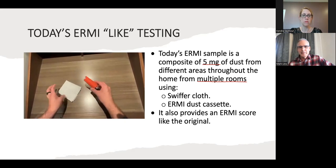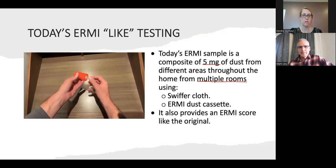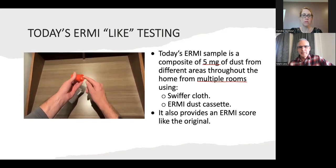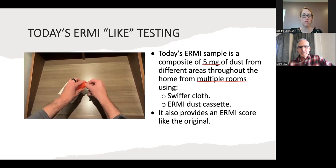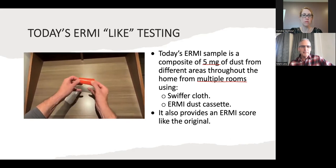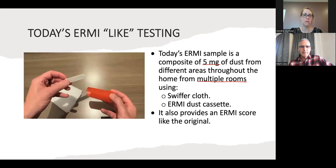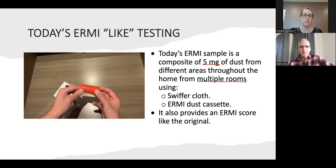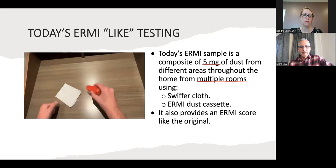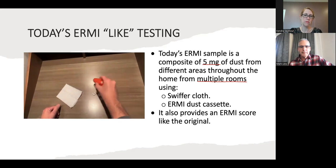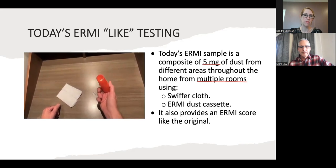Then you have another option where you can use a cassette that attaches to the hose of a vacuum. Inside the cassette is a mesh-like filter where all the dust gets collected. Once it's on the hose, you would vacuum the areas where the dust is located. Both sampling methods — the ideal thing is to collect four to five milligrams of dust.